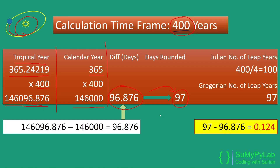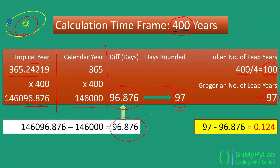In the Julian calendar, every 4th year is a leap year, so in 400 years there are 100 leap years. But as per this calculation, there should be at most 97, not 100, leap years. That is the correction made in the Gregorian calendar — there should be 97 leap years in a time frame of 400 years. In the Julian calendar it was 100, so there was a drift of nearly 3 days from the tropical year. The remaining error in the Gregorian calendar is just 0.124 days in a timespan of 400 years, which we may ignore. And that is the basis of leap year calculation in the Gregorian calendar.